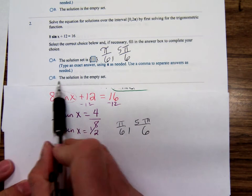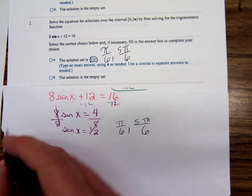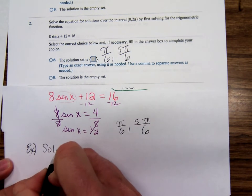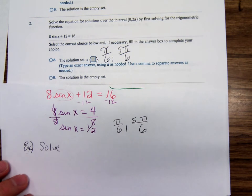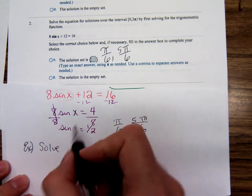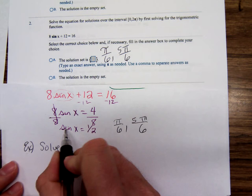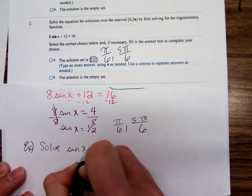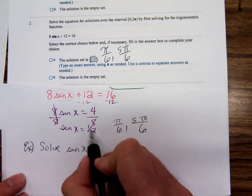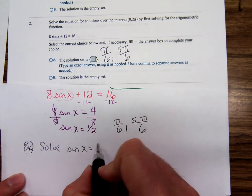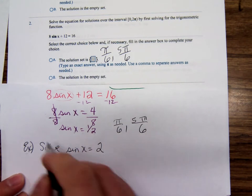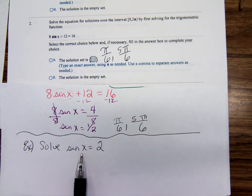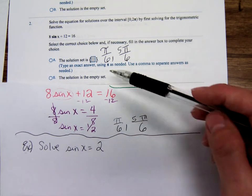Sometimes students say, well, what about this empty set? When would that happen? Here's an example of one that the answer is going to be empty set. Instead of right here, sine x equals a half, if you had had sine x equals 2...